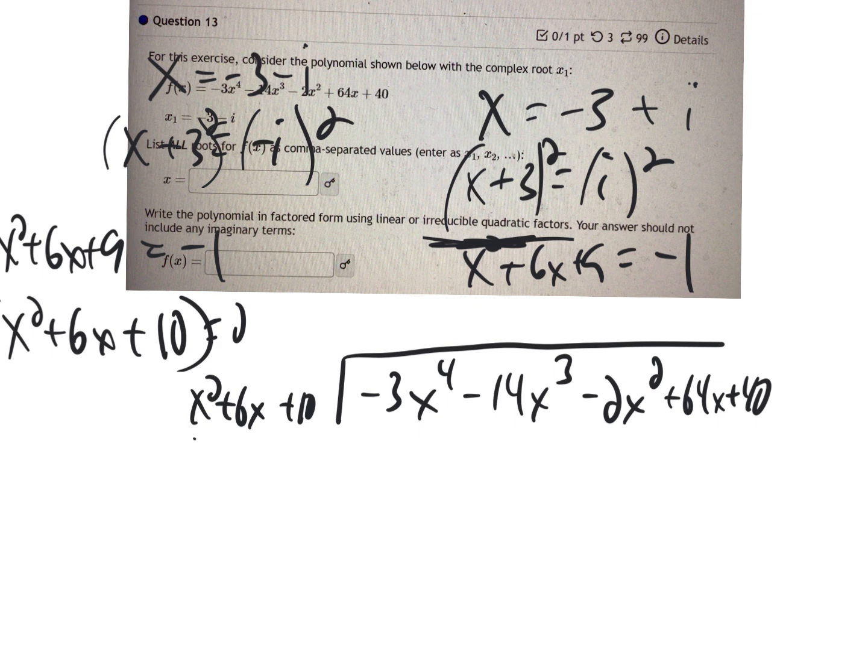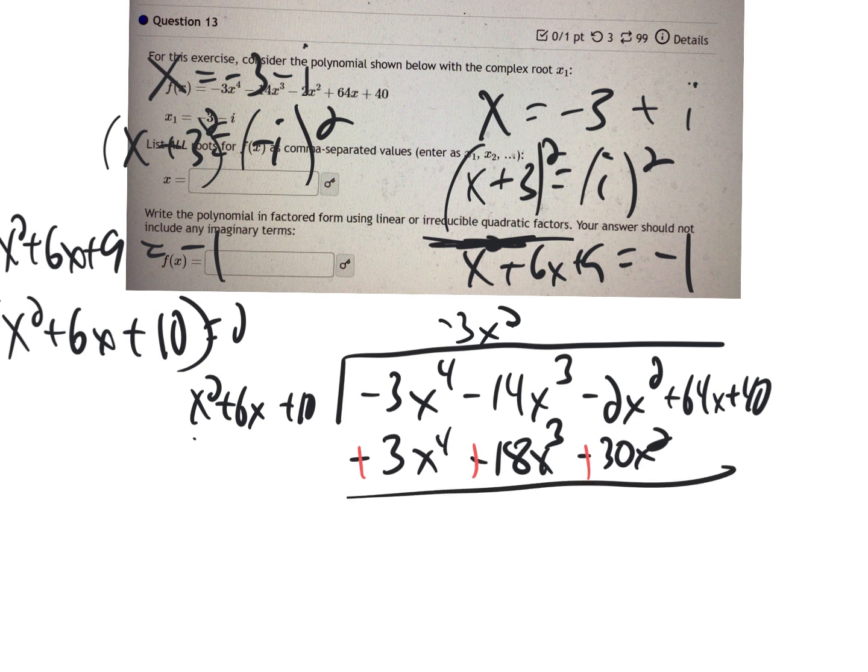So what times x squared is negative 3x to the fourth? Well, negative 3x squared. And then I distribute it through negative 3x to the fourth minus 18x to the third minus 30x squared. And then remember, we're going to change the sign because we're subtracting. So the 3x to the fourth is gone. I'm getting 4x to the third plus 28x squared. And I'm just going to bring down the rest of it right now so I don't forget it.